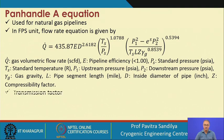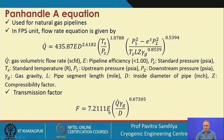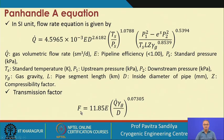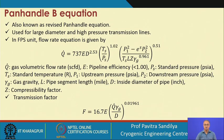The transmission factor can be given in terms of the pipeline efficiency, the volumetric flow rate, inside diameter, and gas gravity. The same Panhandle A equation is given in terms of SI units — the particular constant value has changed while the rest of the terms remain the same. The transmission factor expression has also changed slightly due to the change in the particular constant.